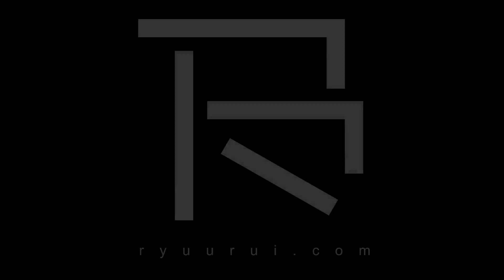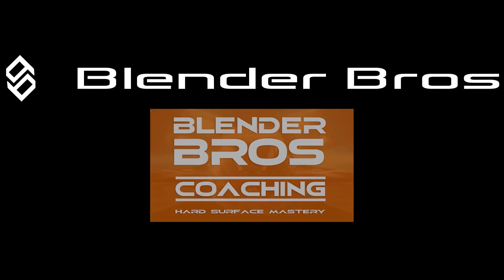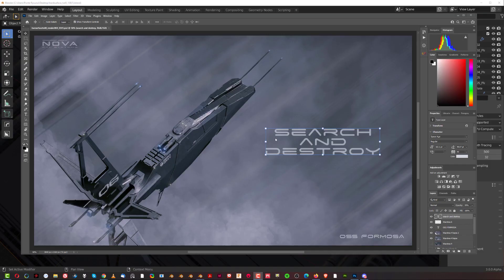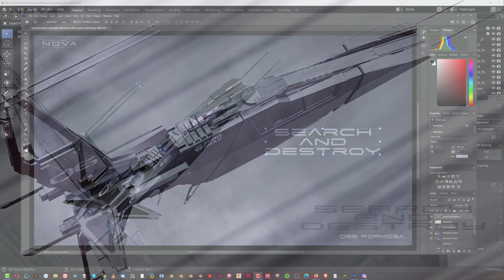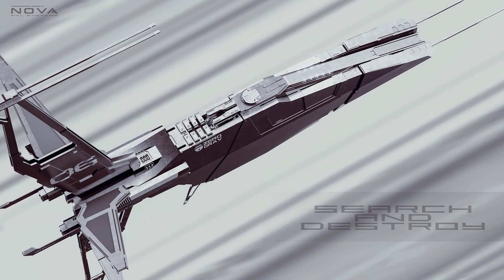Hi guys. In this video we're going to be continuing with the critique — it's kind of a part two. What I'm going to be doing is recreating this render. We're going to be fixing all the problems: the blur flow, the levels of the black tones, the text positioning, etc. So I will basically show you how I would approach creating this render.